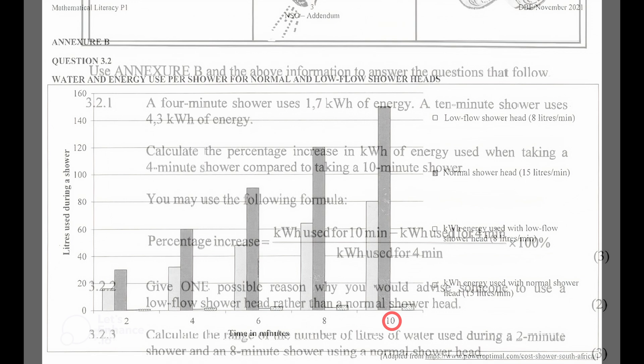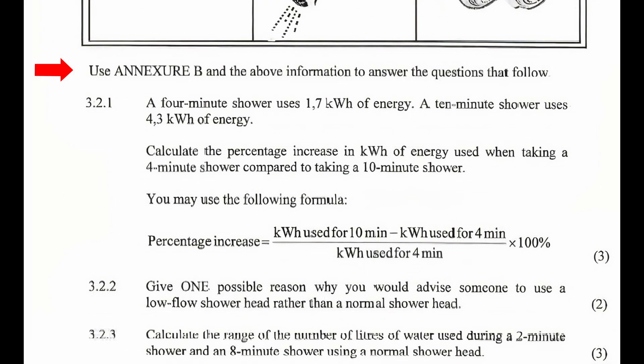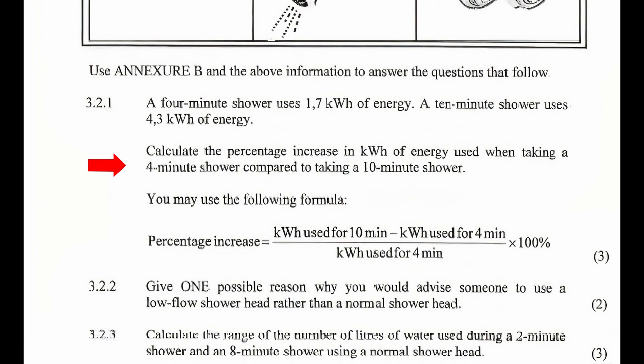We are instructed to use Annexure B and the above information to answer the questions that follow. Question 3.2.1: A four-minute shower uses 1.7 kilowatt hours of energy; a 10-minute shower uses 4.3 kilowatt hours of energy. Calculate the percentage increase in kilowatt-hour energy use when taking a four-minute shower compared to taking a 10-minute shower.